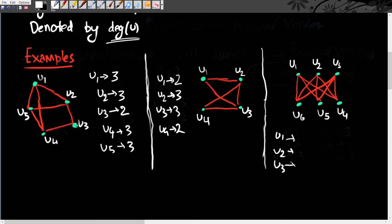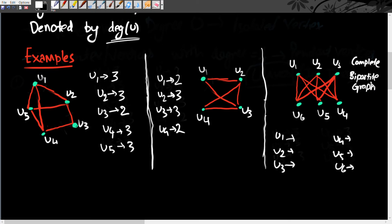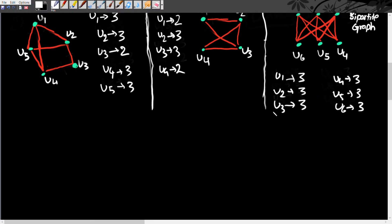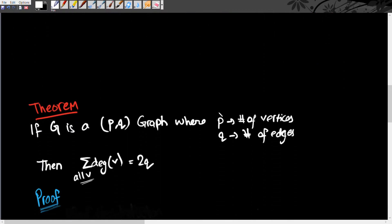In the third example, let's list down all the vertices and their corresponding degrees. This is a complete bipartite graph — there'll be a separate video on this. For u1 there are three edges incident on it, so its degree is three. Similarly for u2, u3, u4, u5, and u6 — the degree of every vertex is the same.